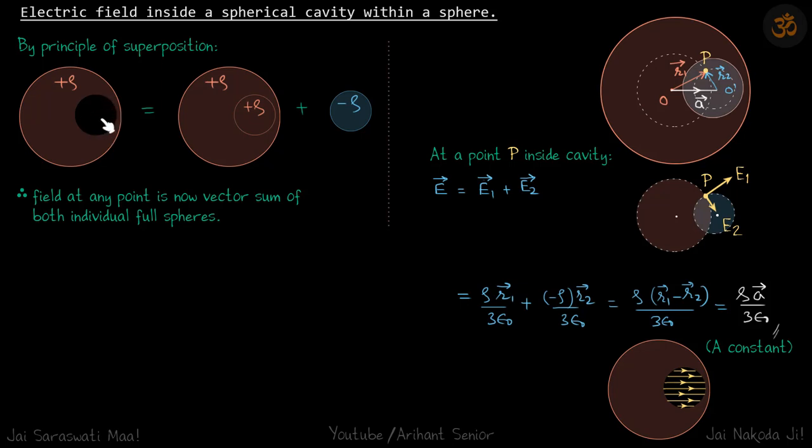So everywhere inside the cavity, this means the electric field is constant and its value is ρa vector/3ε₀. So if you represent it in diagram, the field lines inside the cavity will look like this—they will be parallel and the direction will be along the line joining the center of the sphere and the center of the cavity.